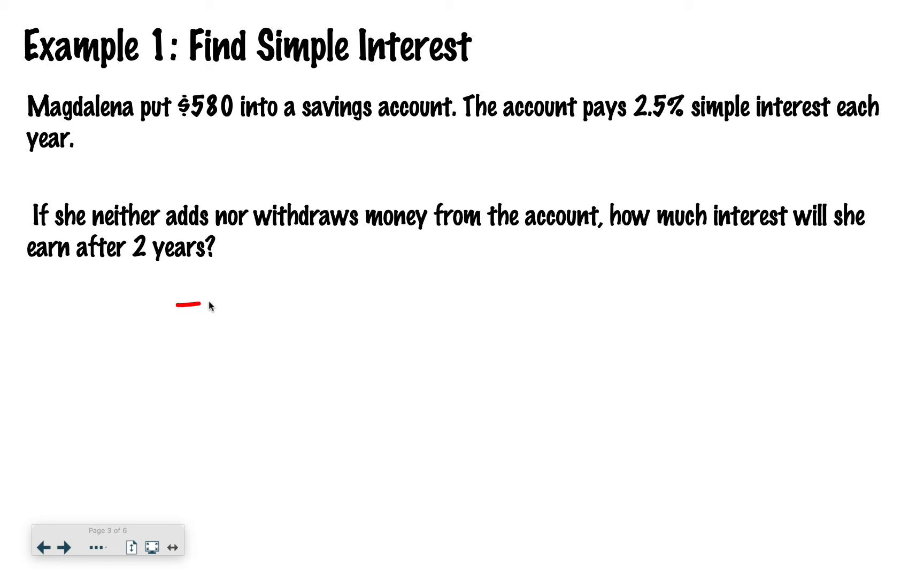So I'm solving for the interest. So I say I equals, I'm just going to write the equation up here. So I equals the principal. So what's the starting amount in this problem? She started by putting $580 into the account. So I'm going to say 580 times the interest rate, which is 2.5. So I'm going to change that to a decimal, which would be 0.025.